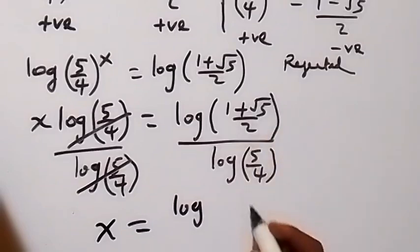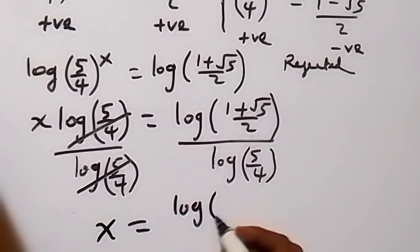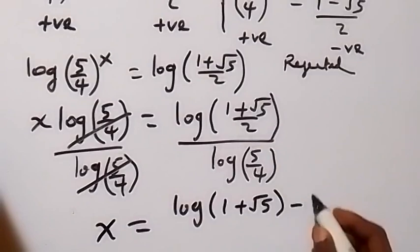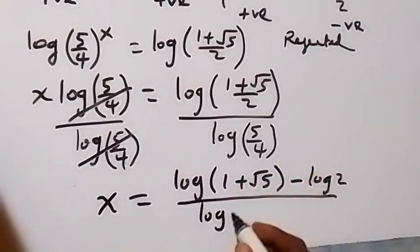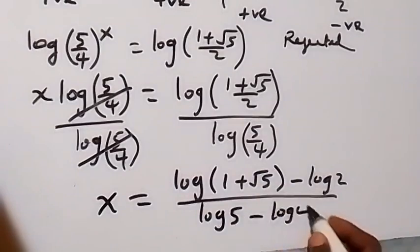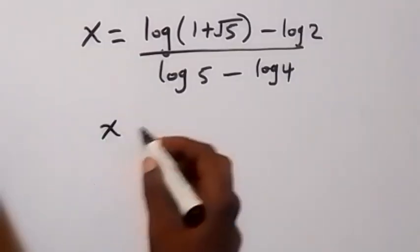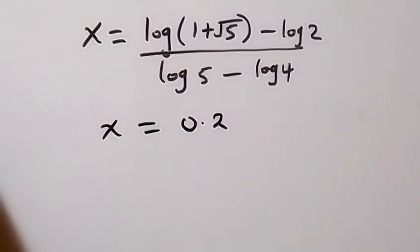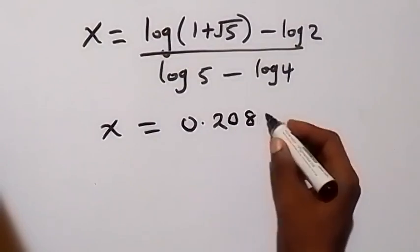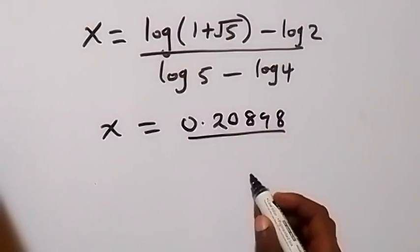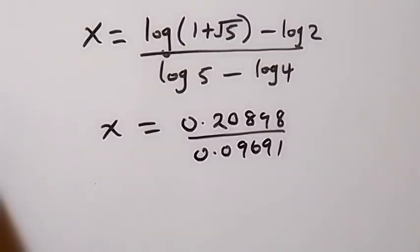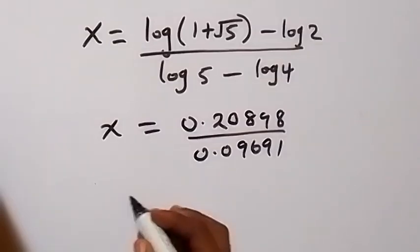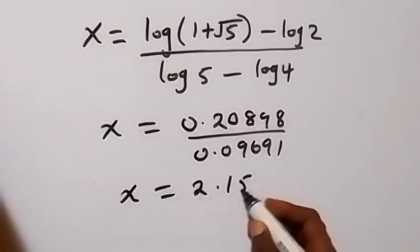We separate the logarithms since division becomes subtraction: x equals log(1 plus root 5) minus log 2, all divided by log 5 minus log 4. Putting this in decimal form, the numerator gives 0.20898 and the denominator gives 0.09691. Dividing these gives x equals 2.15643.